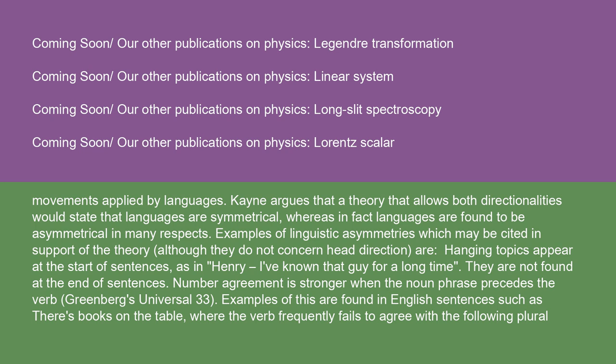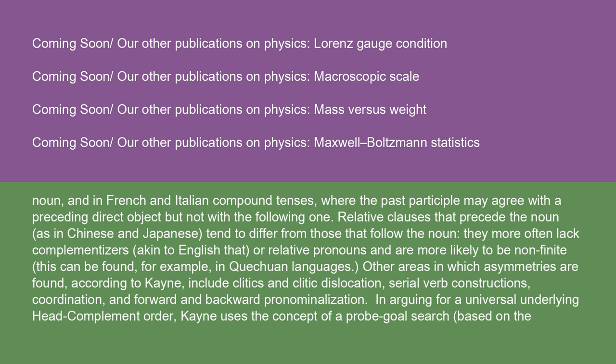Number agreement is stronger when the noun phrase precedes the verb (Greenberg's Universal 33). Examples of this are found in English sentences such as 'there's books on the table', where the verb frequently fails to agree with the following plural noun, and in French and Italian compound tenses, where the past participle may agree with the preceding direct object, but not with the following one. Relative clauses that precede the noun, as in Chinese and Japanese, tend to differ from those that follow the noun — they more often lack complementizers akin to English 'that' or relative pronouns, and are more likely to be non-finite. This can be found, for example, in Quechuan languages.